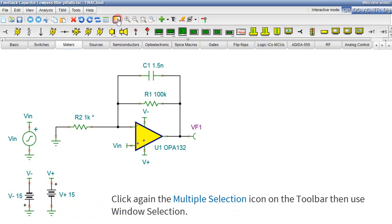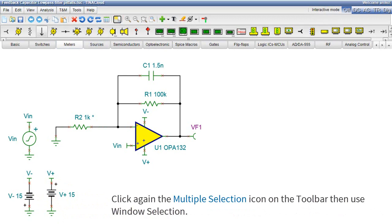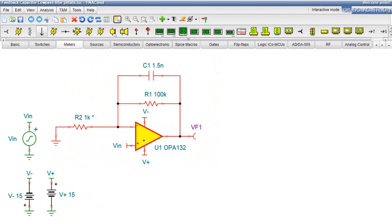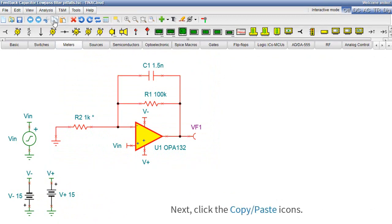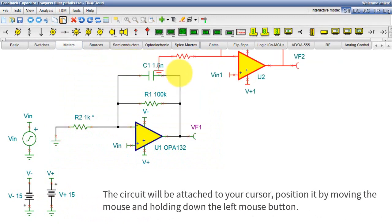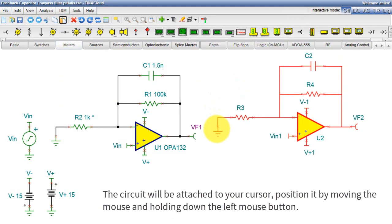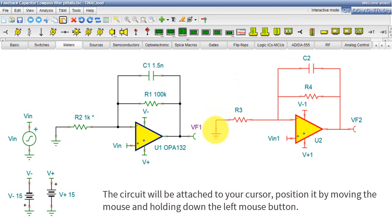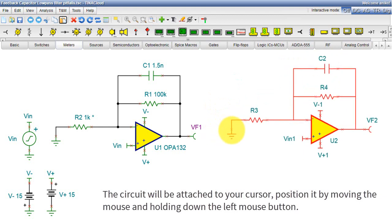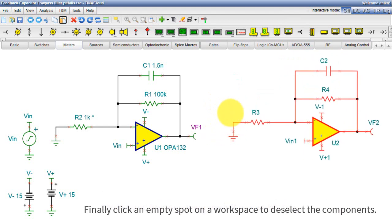Now, click again the Multiple Selection icon on the toolbar, then use Window Selection. Next, click the Copy-Paste icons. The circuit will be attached to your cursor. Position it by moving the mouse and holding down the left mouse button. Finally, click an empty spot on a workspace to deselect the components.